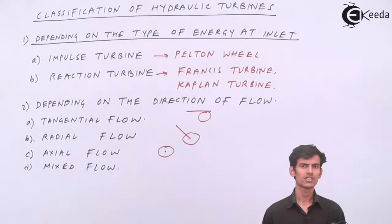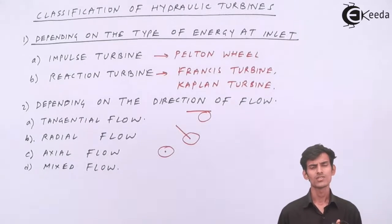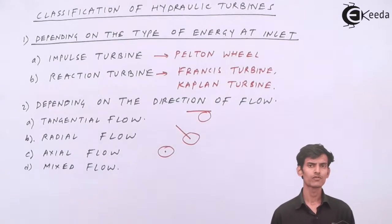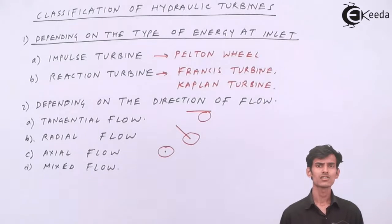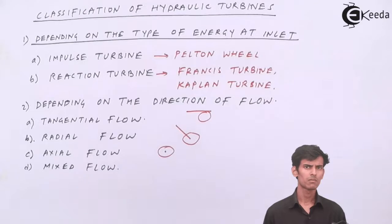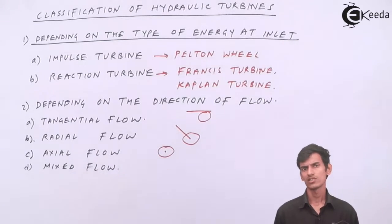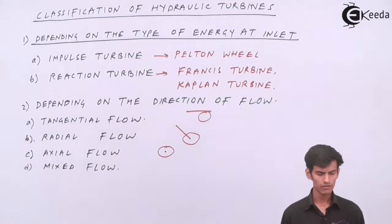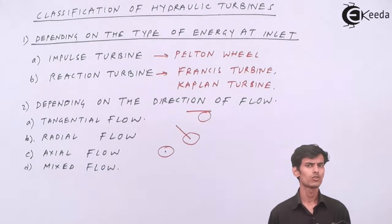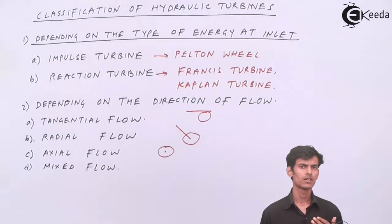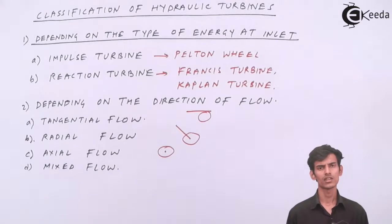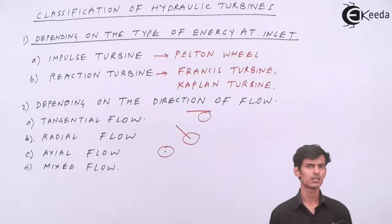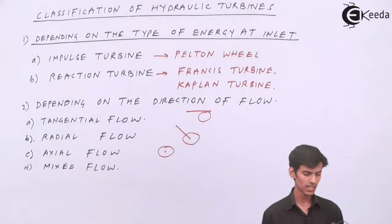Next is mixed flow. In certain turbines the flow is mixed — the flow comes in radially and leaves axially. Such turbines are called mixed flow turbines. The Francis turbine is a type of mixed flow turbine. In earlier days Francis turbines were only radial, but through development it has become a mixed flow design. So the example of mixed flow is Francis, axial flow is Kaplan, and tangential flow is Pelton wheel.